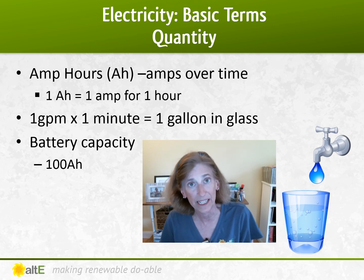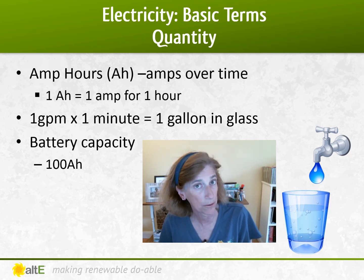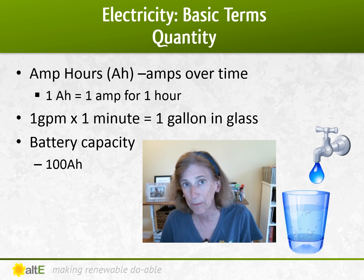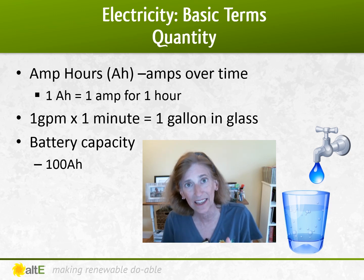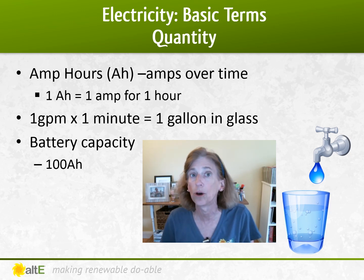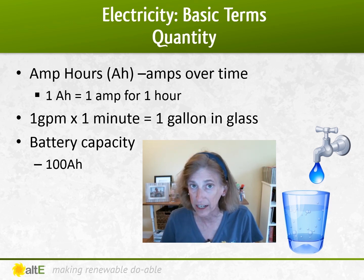Batteries — specifically deep cycle batteries — are rated by their amp hour capacity: how many amp hours can they store? But amp hours alone doesn't tell you the whole story.